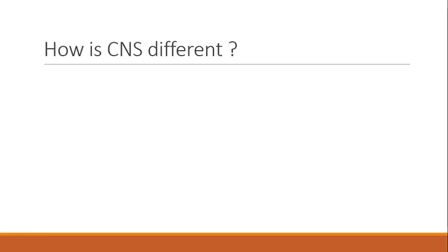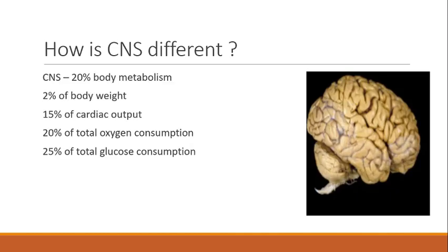How is the CNS different? The CNS contributes to 20% of body metabolism, 2% of body weight, 15% of cardiac output, 20% of total oxygen consumption, and 25% of total glucose consumption. Though the density of lymphatic tissue depends on how metabolically active an organ is, the CNS — being highly metabolic at 20% of body metabolism — lacks a proper lymphatic system.